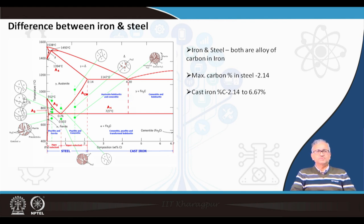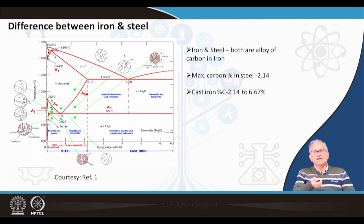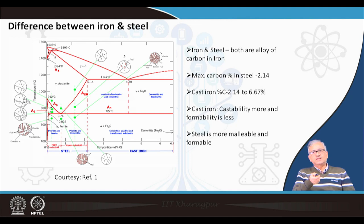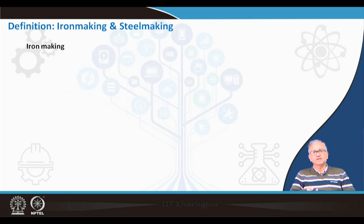Both hypoeutectoid and hypereutectoid steels are formable with sufficient strength. There are different categories: low carbon, medium carbon, and high carbon steel. Cast iron is more castable but less formable, while steel is more malleable and formable — that is the important difference.